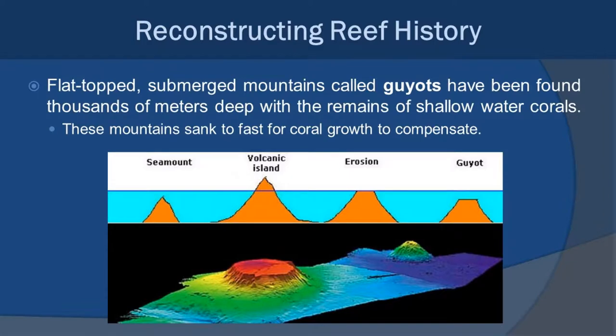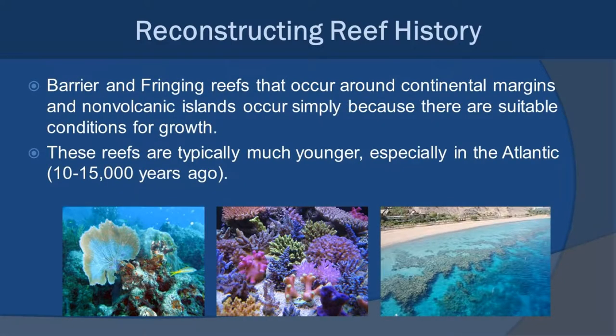We can also look at coral atolls that didn't make it — where subsidence occurred faster than coral could grow. We know this by looking at the geology of seafloors: structures called guyotes are flat-topped underwater mountains where erosion was so fast that as the volcanic island eroded, the corals couldn't catch up, leaving an underwater seamount that's very flat. Fringing and barrier reefs also occur against continents and other land masses — corals need to be shallow, so they need those continental margins to remain at depth.